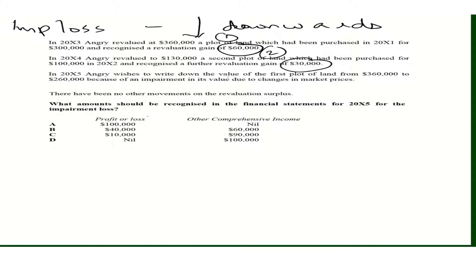Remember: Plot 1 has a revaluation gain of 60,000 and Plot 2 has a revaluation gain of 30,000. One asset's revaluation surplus or deficit should be cancelled only against that same asset. The revaluation surplus of Plot 1 can only be cancelled against the revaluation deficit of Plot 1, and the revaluation surplus of Plot 2 can only be cancelled against the revaluation deficit of Plot 2.